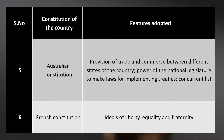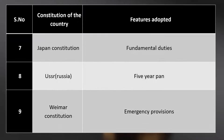From the Australian constitution, the provisions of trade and commerce between different states and the power of the national legislature to make laws for implementing treaties concurrently were adopted. The French constitution provided the ideal of liberty, equality and fraternity. The Japanese constitution gave the concept of fundamental duties, the USSR contributed the five-year plan, and the Weimar constitution contributed emergency provisions.